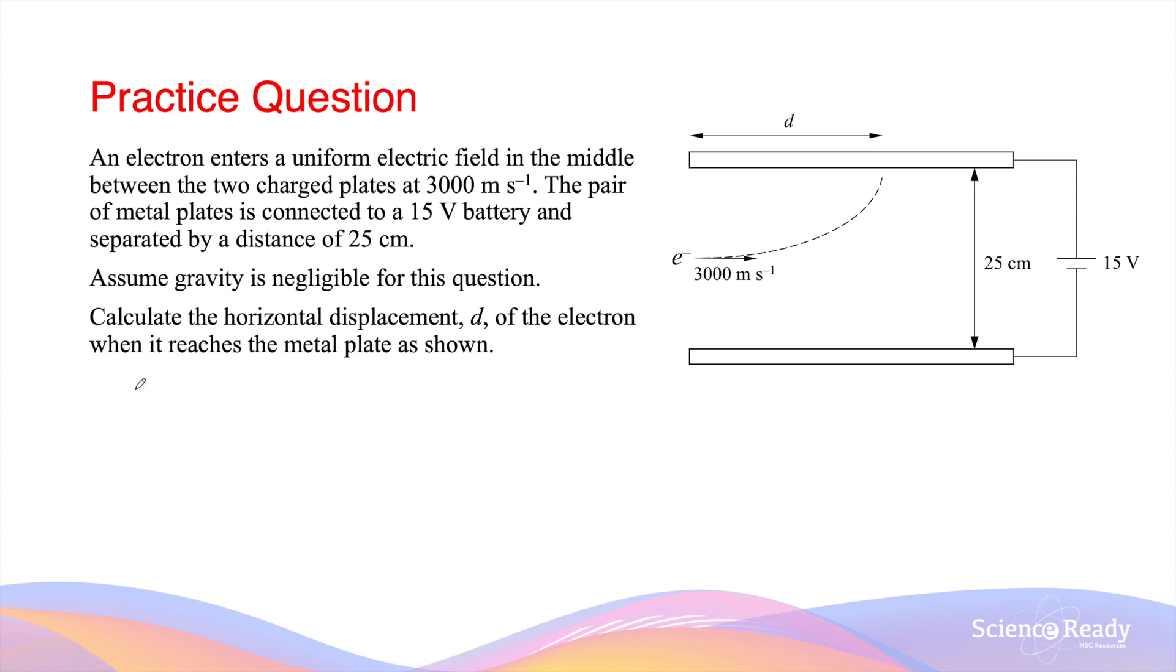Finally, to work out the horizontal range, or the horizontal displacement Sx, we can take the initial horizontal velocity Ux and multiply by the time of flight. The way this equation works is assuming that the horizontal velocity remains constant, as there are no accelerations or forces in the horizontal direction. The initial horizontal velocity is 3,000 meters per second, and the time of flight is 1.5 times 10 to the power of minus 7 seconds. This gives me a horizontal displacement, which is d, of 4.4 times 10 to the power of minus 4 meters.